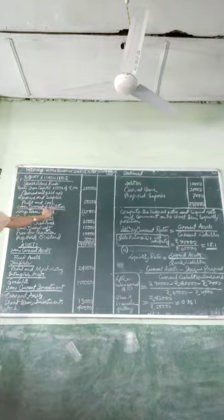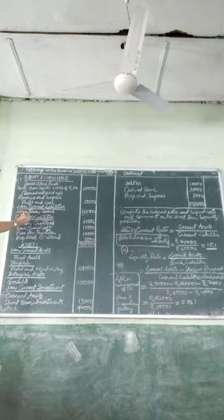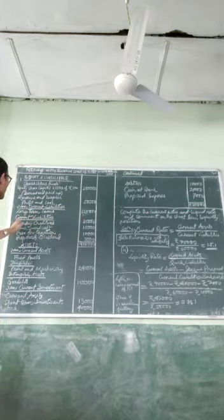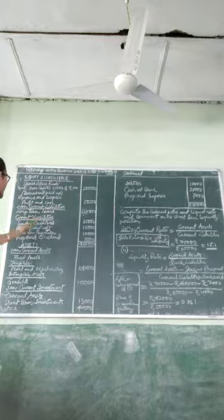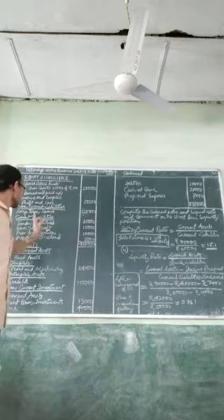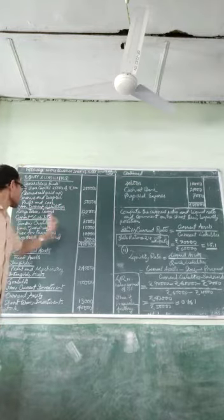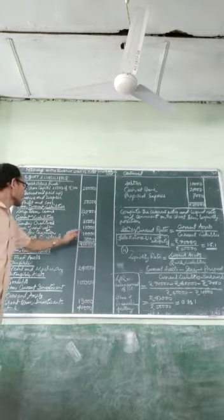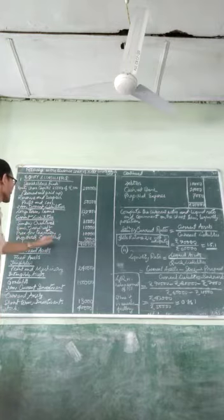Non-current liabilities: under this heading, long-term loan is Rs.120,000. Current liabilities: under this heading, sundry creditors Rs.35,000, bank overdraft Rs.10,000, provision for taxation Rs.10,000, and proposed dividend Rs.5,000. Then we move to the asset items.